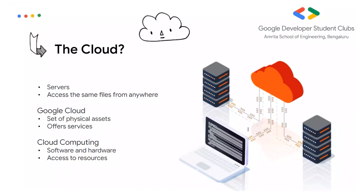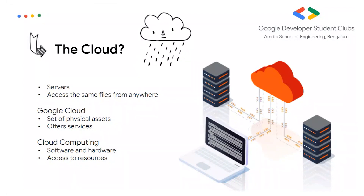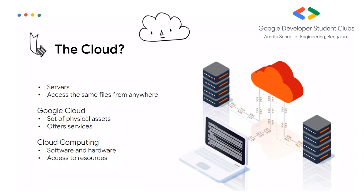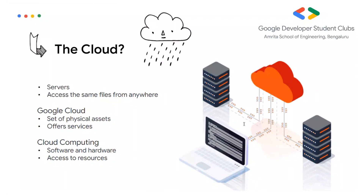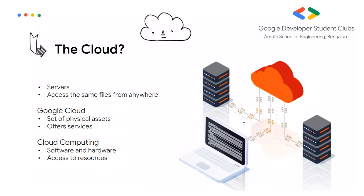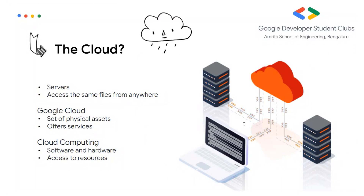I'm sure all of you have a rough idea about what exactly the cloud is, but to understand it better: the cloud refers to servers that are accessed over the internet, and software and databases that run on these servers. Cloud servers are located in data centers all over the world. By using cloud computing, users and companies do not have to manage these servers themselves or run the software applications on their own machines. The cloud enables users to access the same files and applications from any device, because the computing and storage takes place on servers in a data center — instead of locally on our system, it's placed in a central place where everyone can access it.